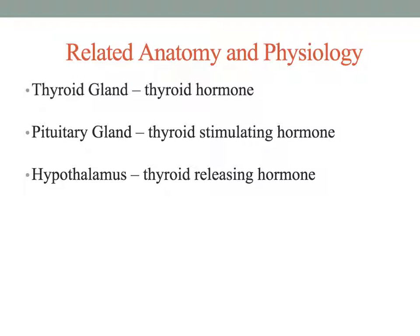These are other parts of the endocrine system that can affect thyroid function. Normal thyroid function is required for every metabolic process in the human body. Growth and development, protein synthesis, and cell metabolism are all dependent on an adequate supply of thyroid hormone to the peripheral tissues.